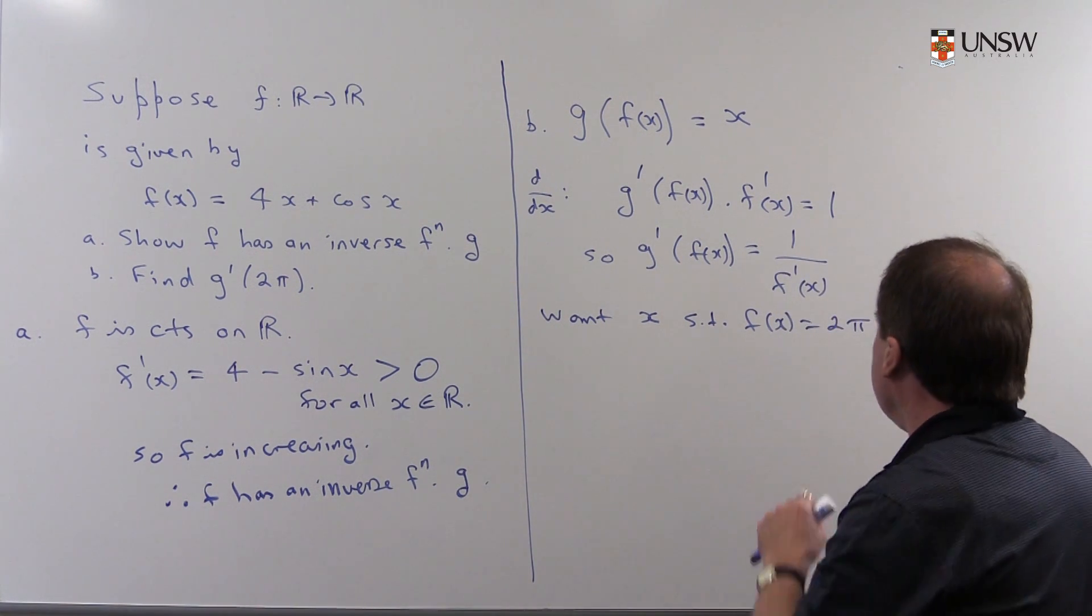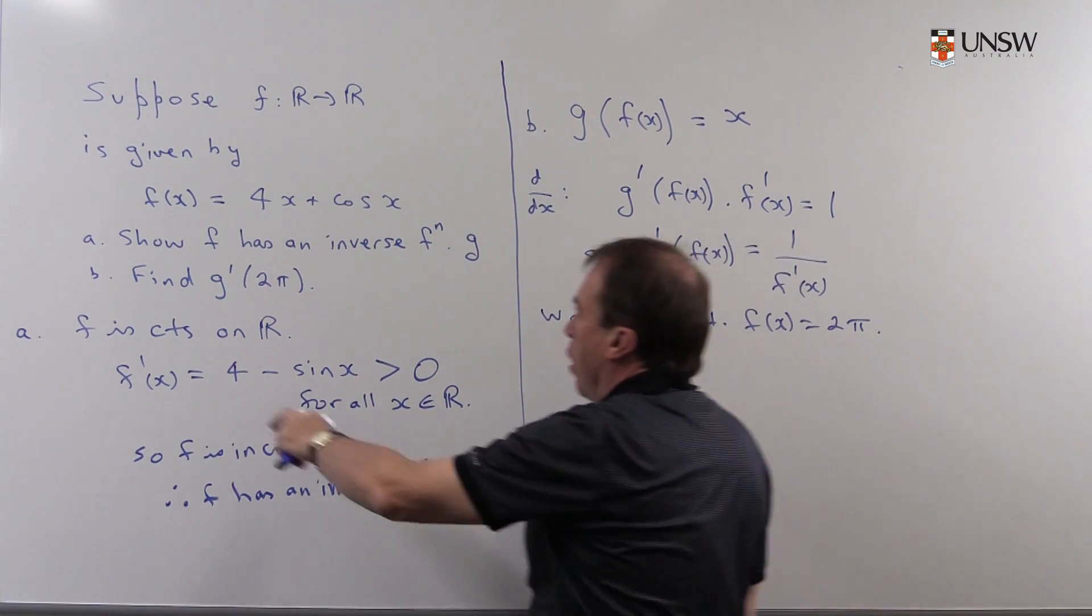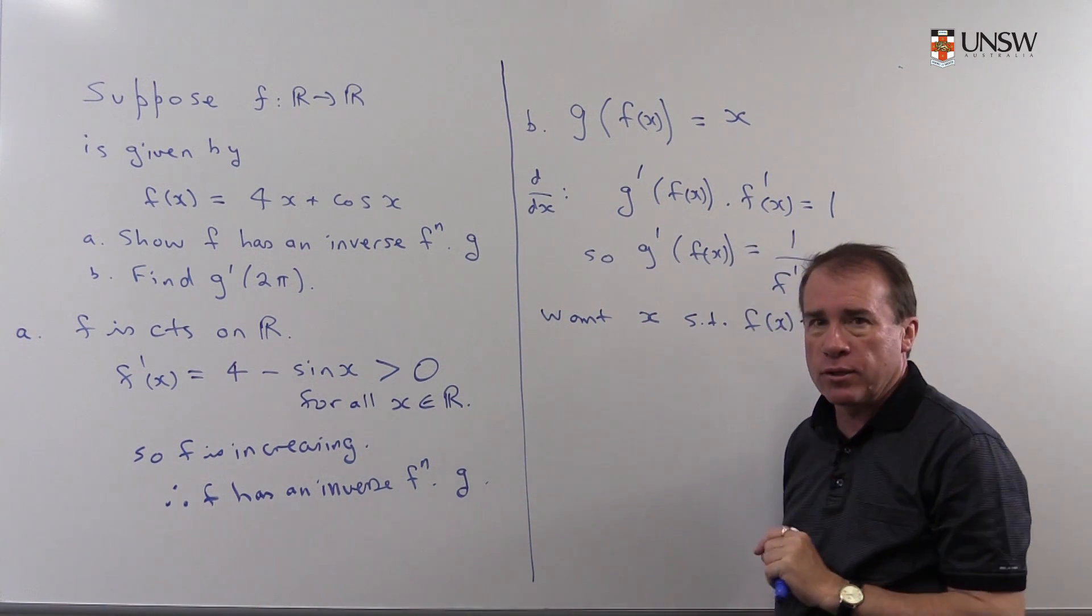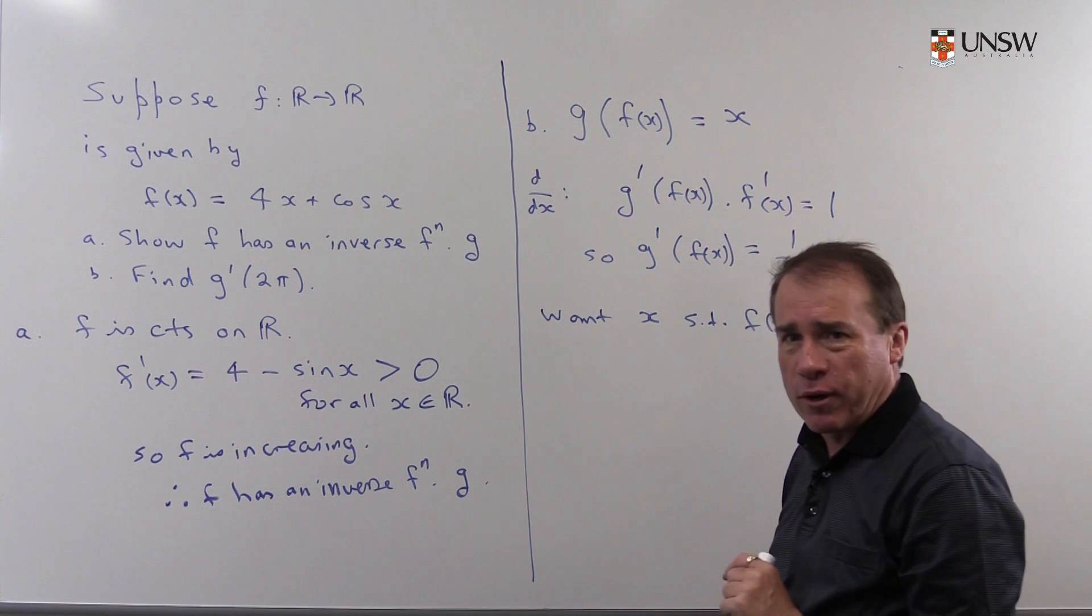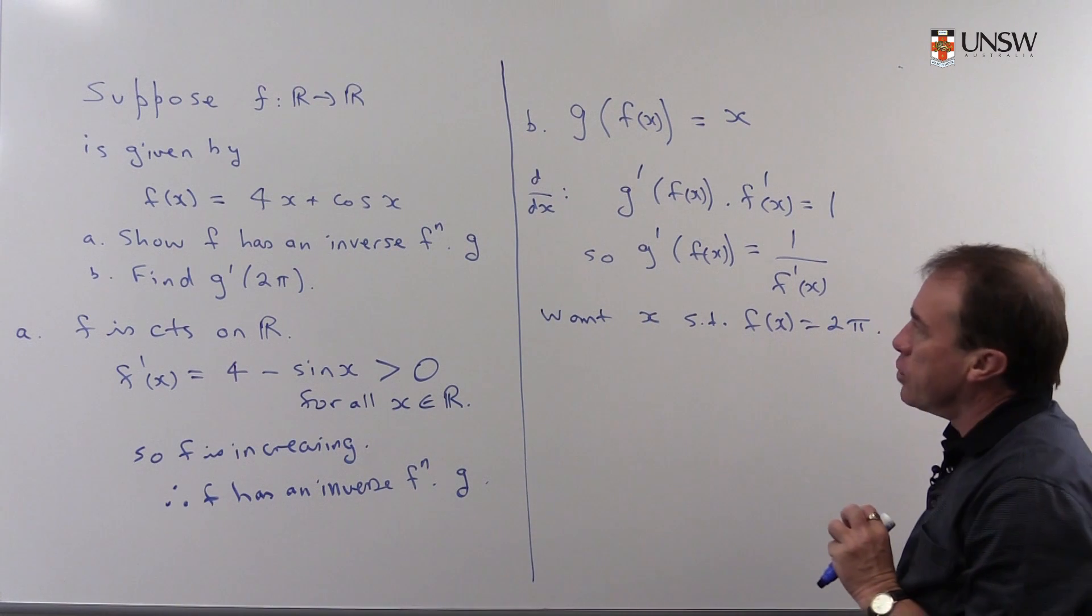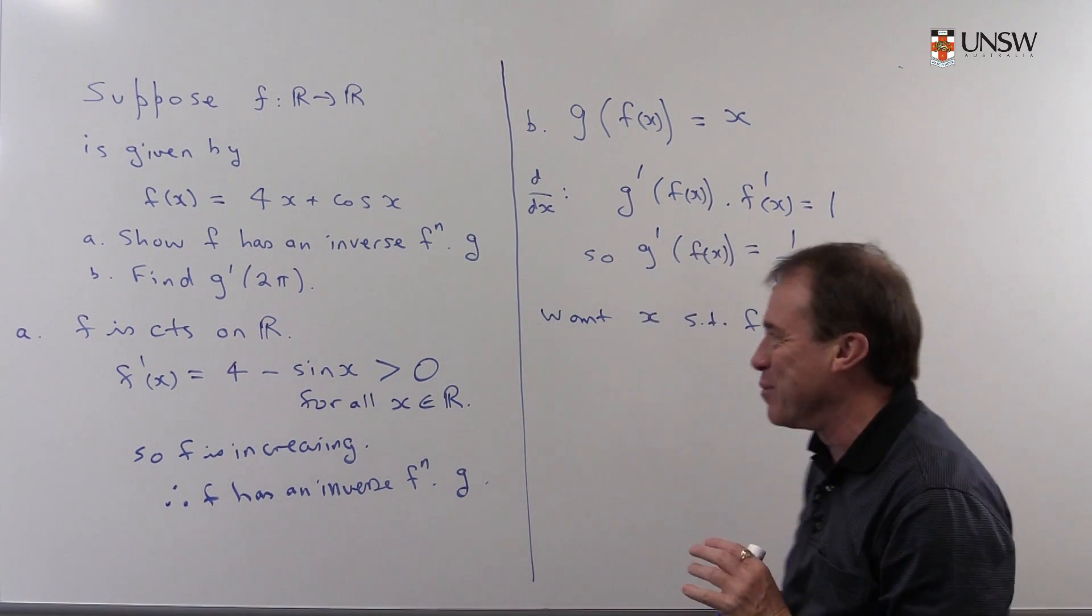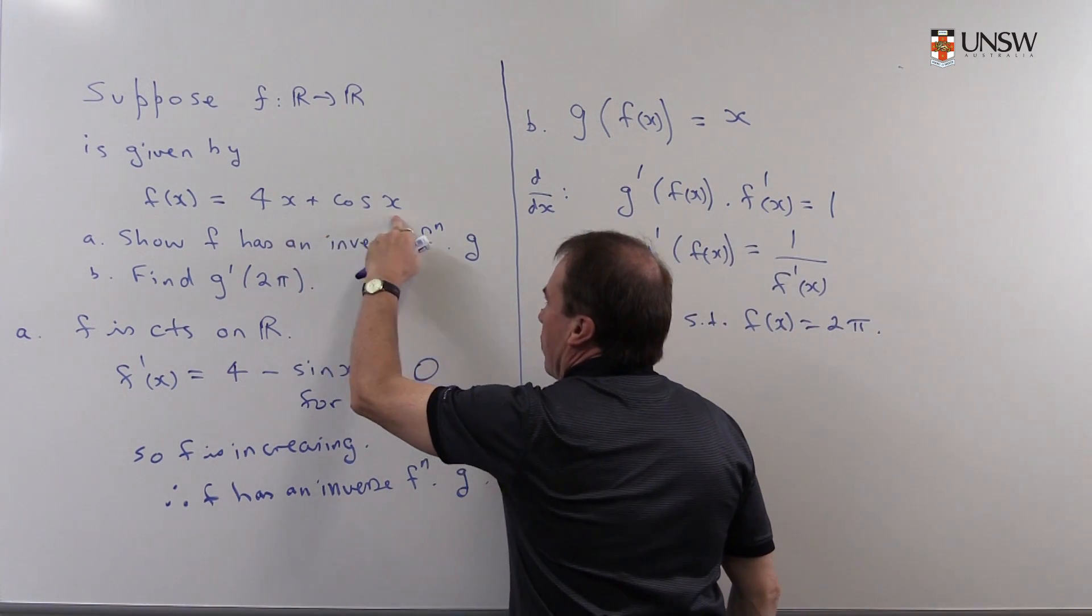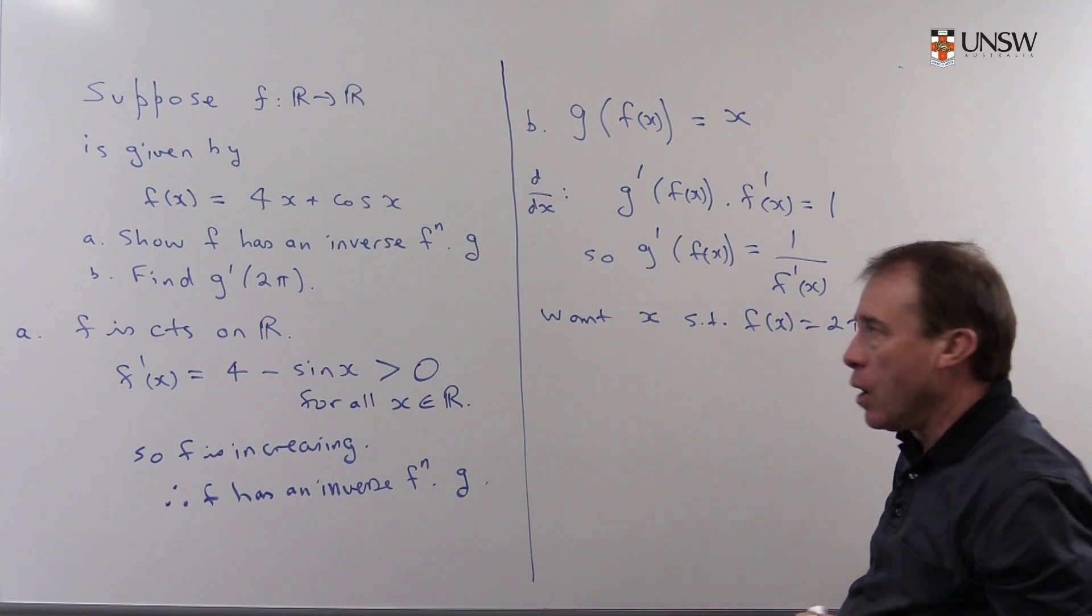Well again, you can make very heavy weather of this by, if you put 2π over here and you try and solve 4x plus cos(x) equals 2π algebraically, well that's very difficult. In fact, it's pretty well impossible. So I'm not going to do it algebraically. What I want to do is just use some common sense. I'm just going to stand back from the problem and say, look, I want, I've got to find a value of x to plug into here that's going to give me 2π.